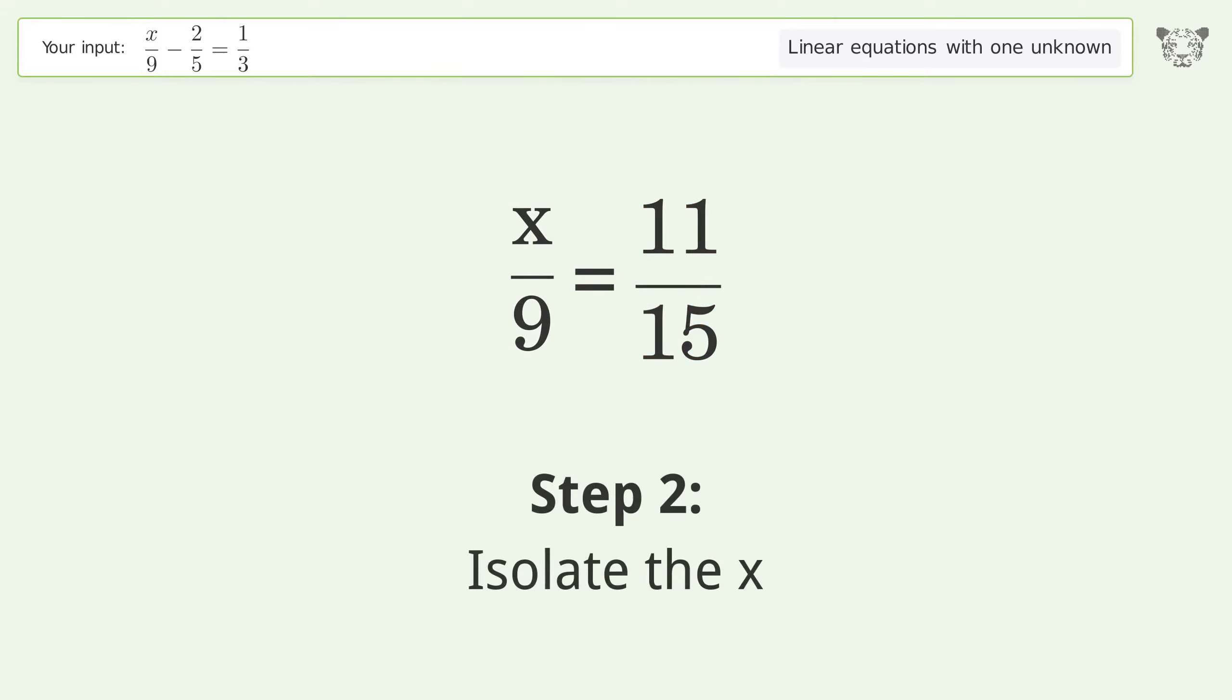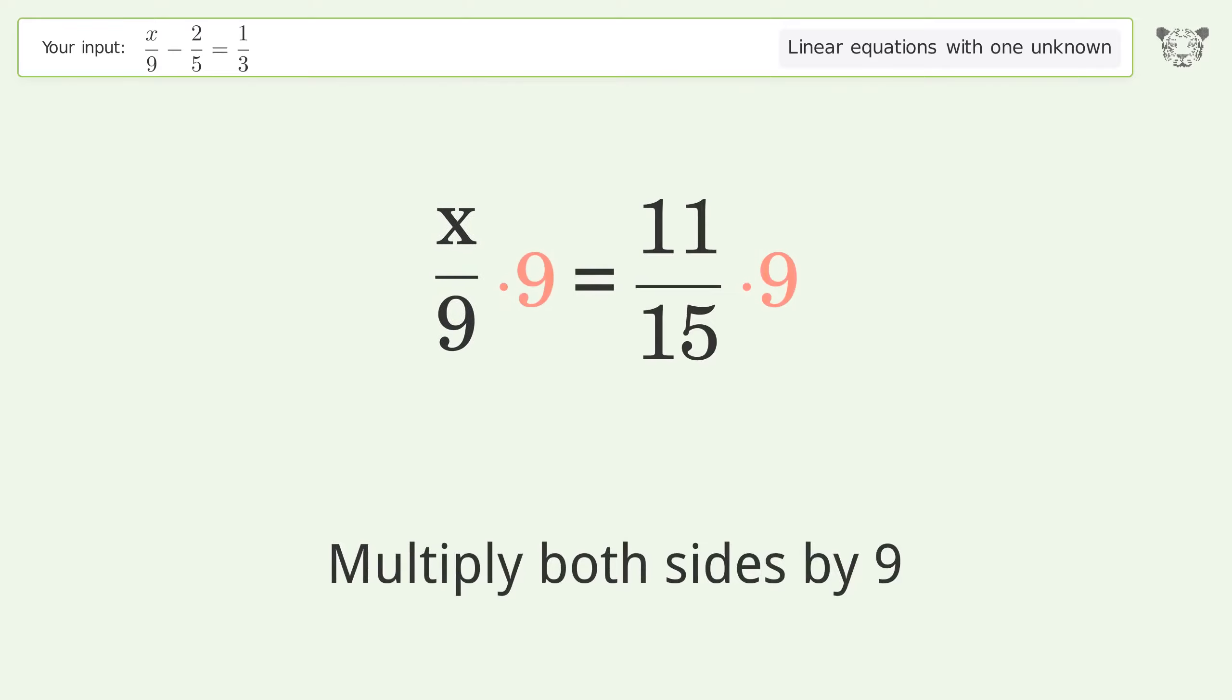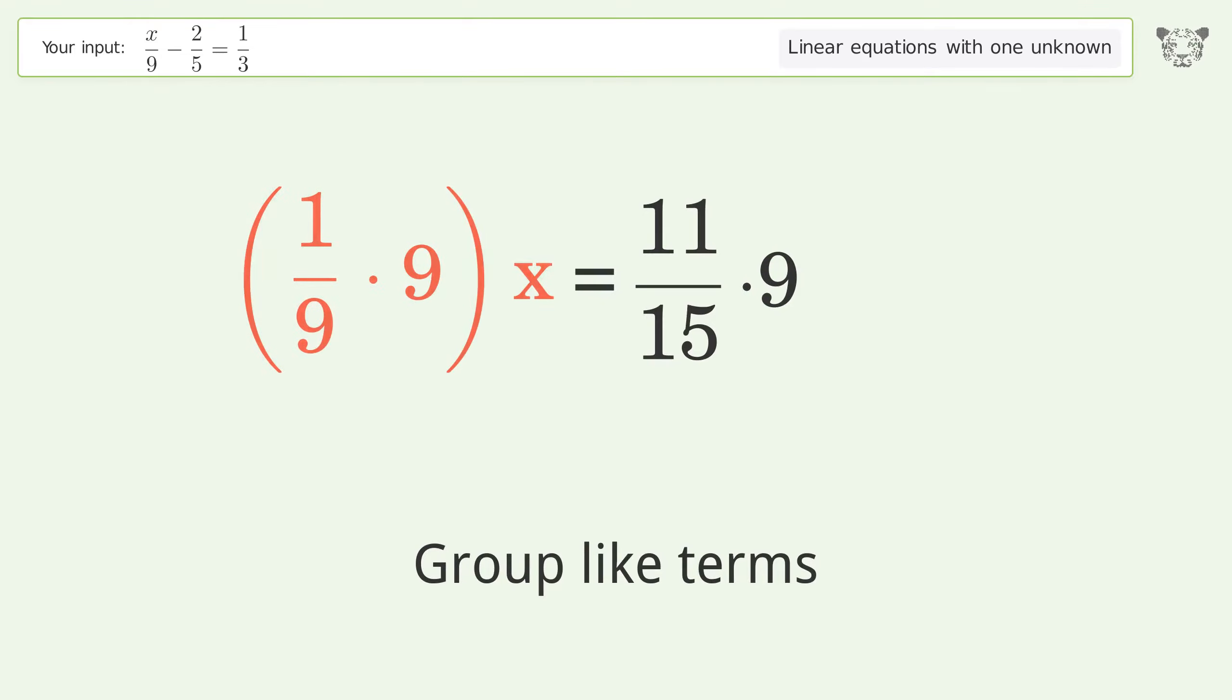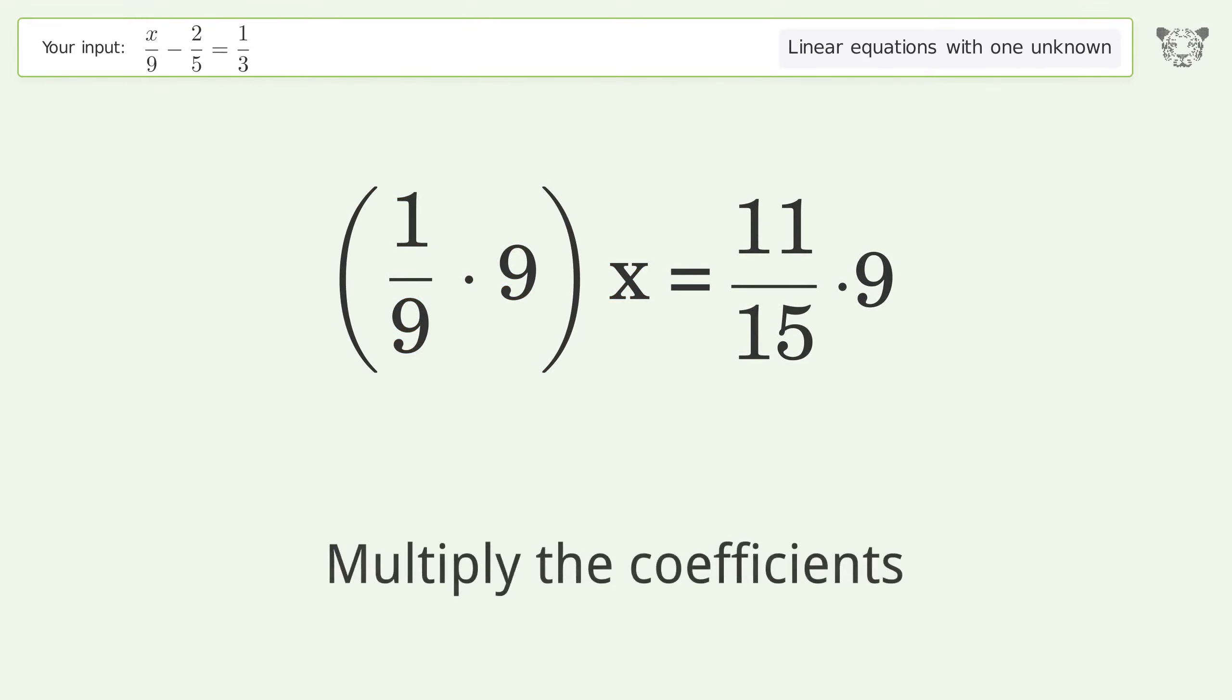Isolate the x. Multiply both sides by 9. Group like terms. Multiply the coefficients.